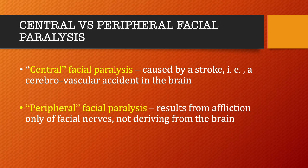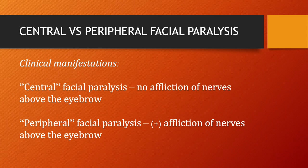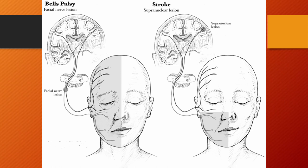Let's compare central facial paralysis from peripheral facial paralysis. Central facial paralysis is caused by a stroke, a cerebrovascular accident in the brain, while peripheral facial paralysis results from affliction only of facial nerves, not deriving from the brain. For central facial paralysis, there is no affliction of the nerves above the eyebrow. For peripheral facial paralysis, there is affliction of the nerves above the eyebrow. Always ask the patient to furrow the forehead. If they can and furrows are equal all across the forehead, that's central facial paralysis. If the furrows are unequal — they show on one side but not on the other — it's peripheral facial paralysis.